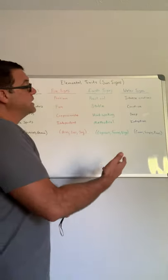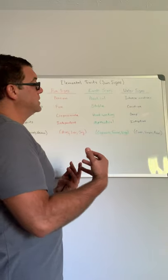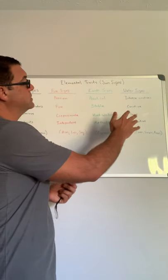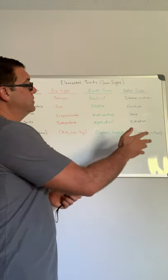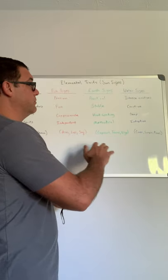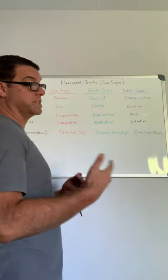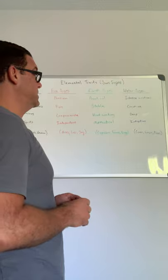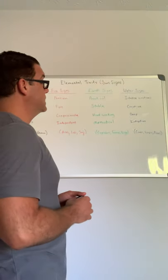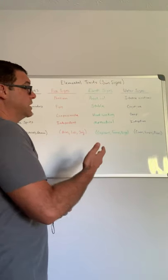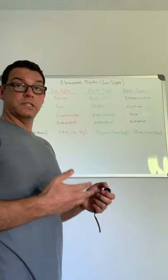With an earth sign, like myself, we're practical, stable, we're hardworking, and we're methodical, or step-by-step, or we like things to be in the step-by-step process. Earth signs include Capricorn, Taurus, and Virgo.